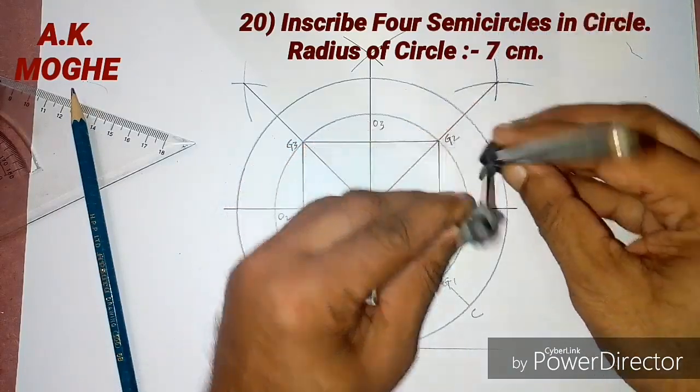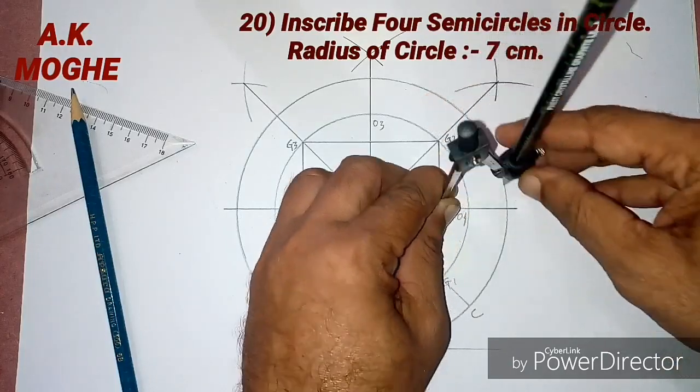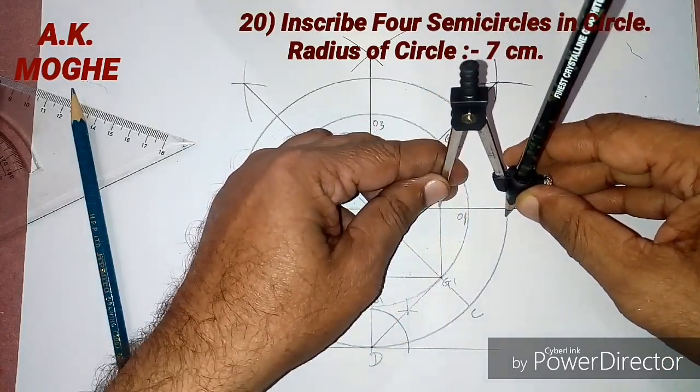It is nothing but the radius of the semicircle touching to the 7 cm radius circle.